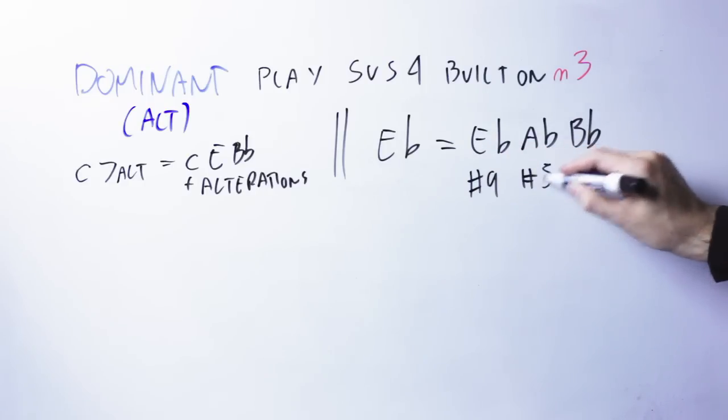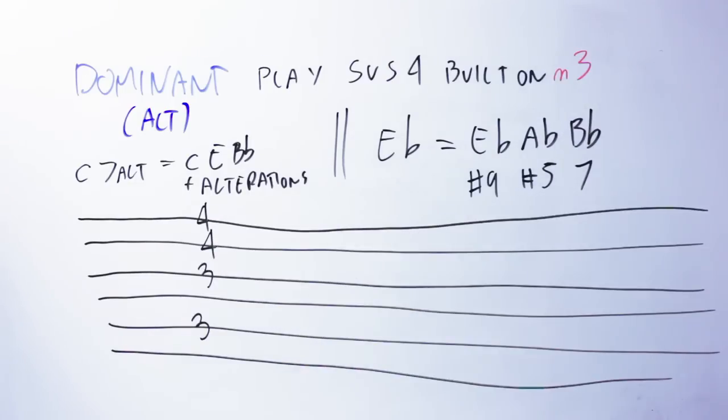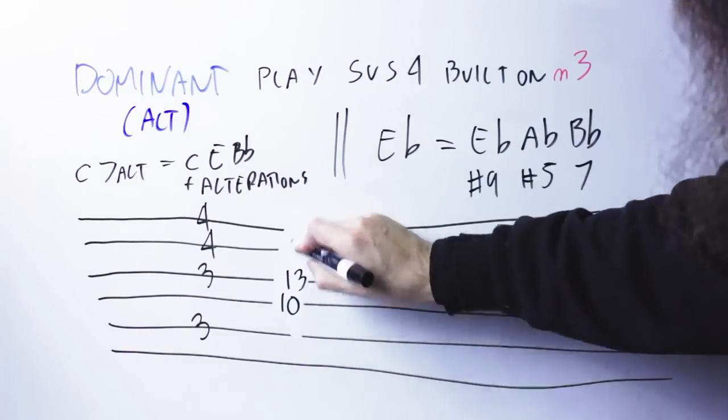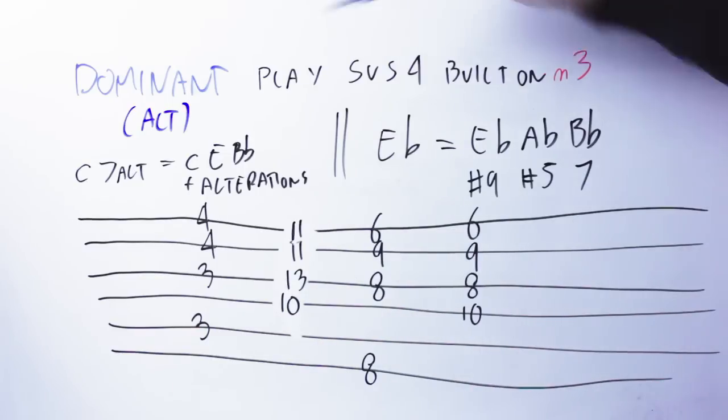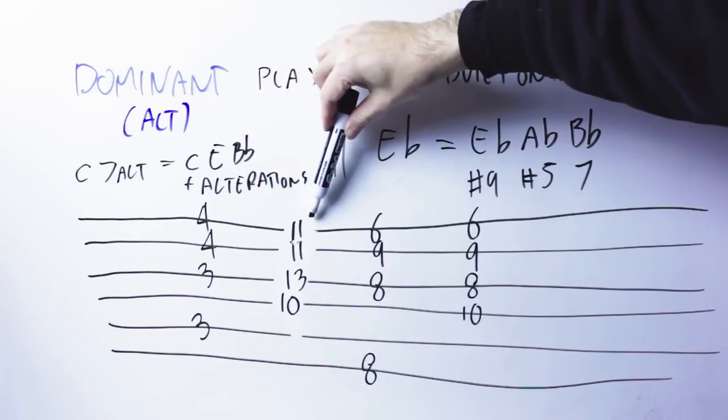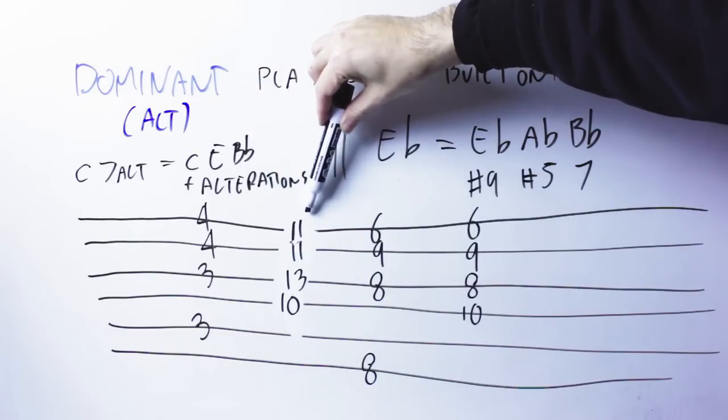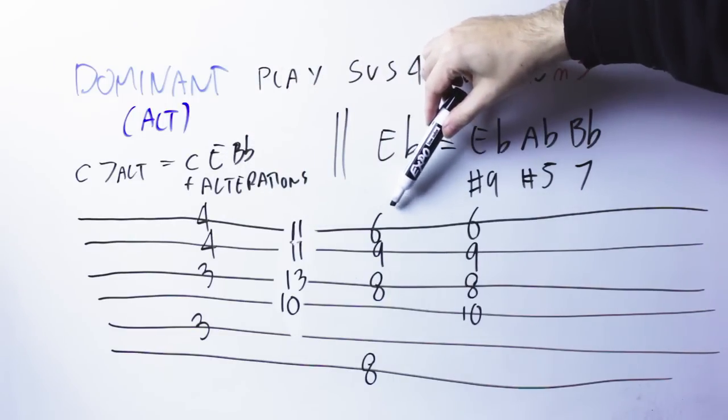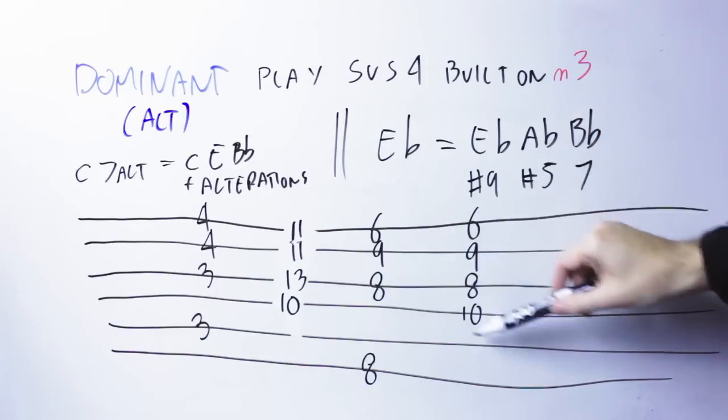And those notes will be classified as the sharp nine, sharp five and seventh of the altered chord. The possible playable shapes for these altered seven chords are those.